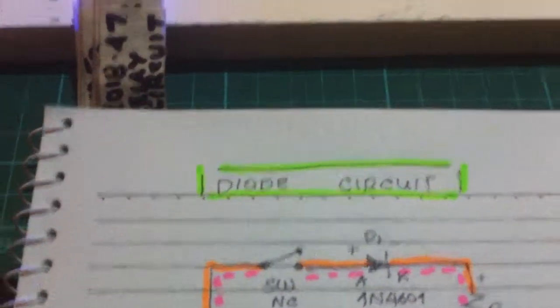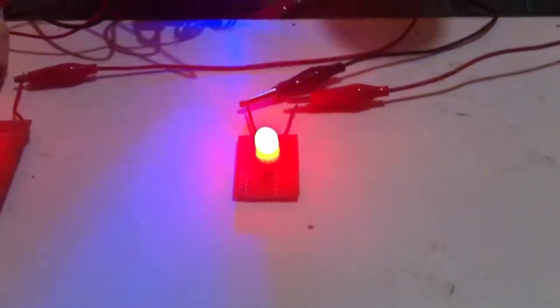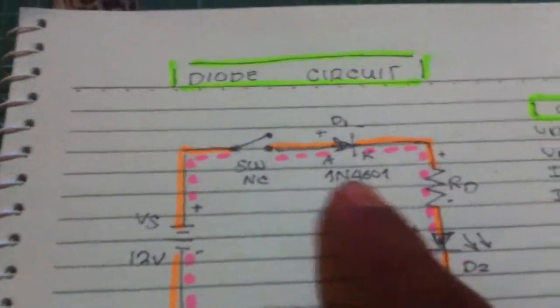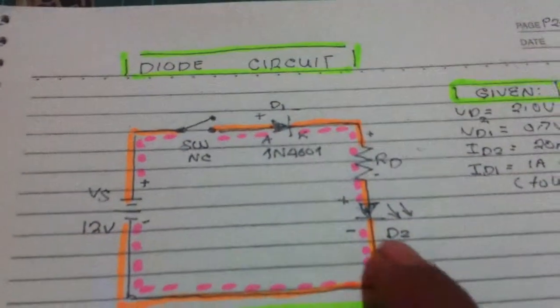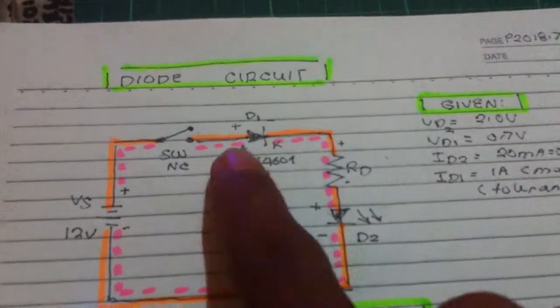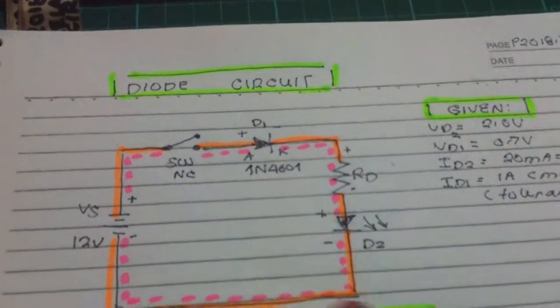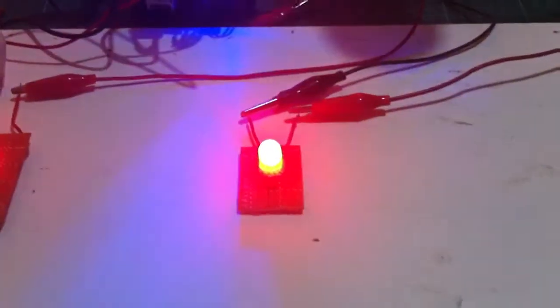This is a diode circuit. The circuit has a 12 volt supply, a switch, a diode 1N4001, a resistor, and an LED - a light emitting diode. This one is a regular diode 1N4001 and this is a light emitting diode, so we have two diodes here.